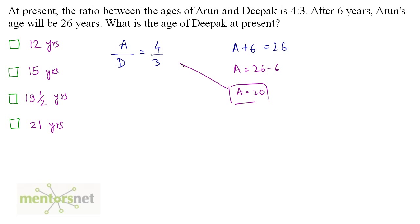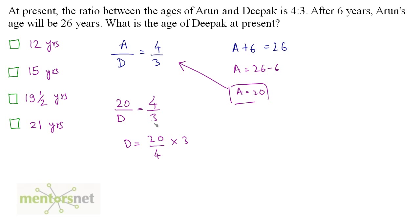Put this value of A in the equation to get Deepak's present age. A is 20, so 20 by D is equal to 4 by 3. So D is equal to 20 divided by 4 times 3, which gives 5 times 3 is 15. So D's present age is 15 years, so option B.